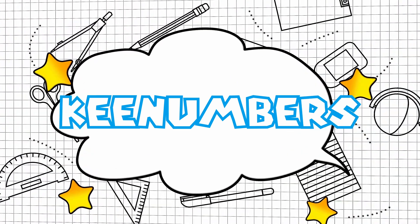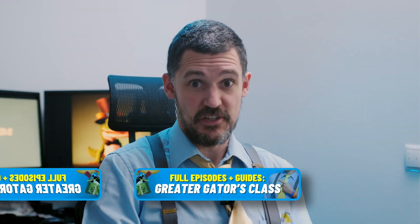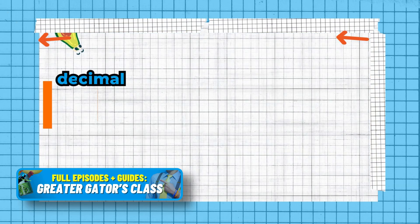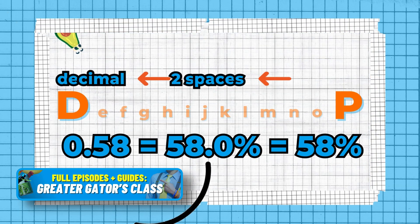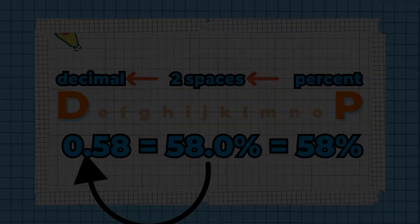B numbers. Welcome to the bonus section. Don't forget: when you convert a percent to a decimal, P comes after D in the alphabet, so you're going to go back two spaces. Let's go.